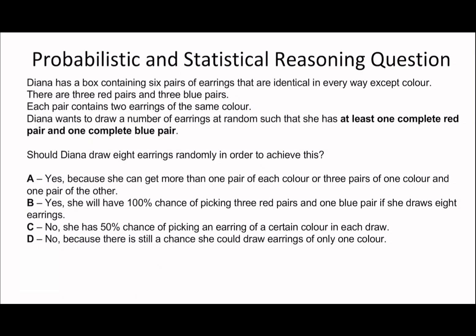So on to the last question. Diana has a box containing six pairs of earrings that are identical in every way except colour. There are three red pairs and there are three blue pairs. Each pair contains two earrings of the same colour. Diana wants to draw a number of earrings at random such that she has at least one complete red pair and one complete blue pair. Should she draw eight earrings randomly? So the way to do this question is to consider the worst possible case scenario.